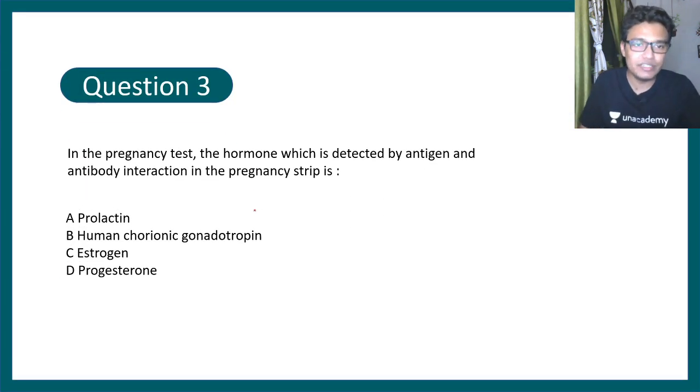Question 3 says: in pregnancy test, the hormone which is detected by antigen-antibody interaction in pregnancy strip is prolactin, human chorionic gonadotropin or HCG, estrogen, or progesterone. The correct option would be HCG and the particular video concept is given in the i button.